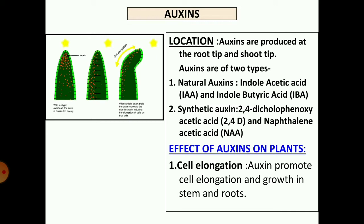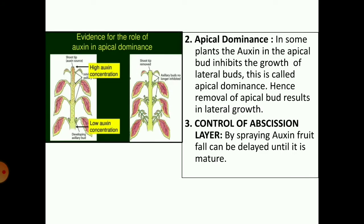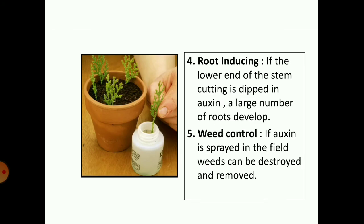What is the effect of auxins on plants? Auxins promote cell elongation and growth in stem and roots. Apical dominance: in some plants, auxins in the apical bud inhibit the growth of lateral buds — this is called apical dominance. Whenever the apical bud is removed, it results in lateral growth. Control of abscission: by spraying auxin, fruit fall can be delayed until the fruit is mature. If we spray auxins at the right time, it will delay the falling of fruits and we will get the ripened fruit on the plant itself. Root inducing: if the lower end of a stem cutting is dipped in auxin, a large number of roots develop, thus the chances of the plant surviving are increased.